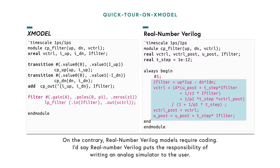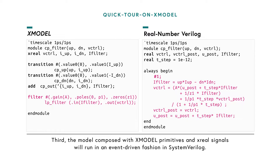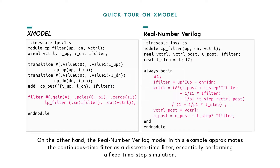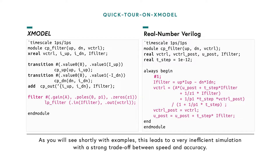Real Number Verilog puts the responsibility of writing an analog simulator to you. Third, the model composed with X-Model primitives and X-Real signals will run in an event-driven fashion in SystemVerilog. On the other hand, the Real Number Verilog model approximates the continuous time filter as a discrete time filter, essentially performing a fixed time step simulation, leading to a very inefficient simulation with a strong trade-off between speed and accuracy.